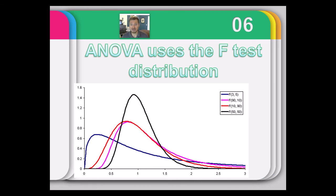The F-distribution is the shape the test statistic takes because it models variances. Since variances can't be negative because they're squared, the F-distribution has a minimum value of zero. Larger values are rare, and it's positively skewed because there is a floor at zero. The F-distribution changes shape — there are several different shapes, all positively skewed, all with a minimum of zero. Each is defined by two different degrees of freedom terms: one in the numerator and one in the denominator.